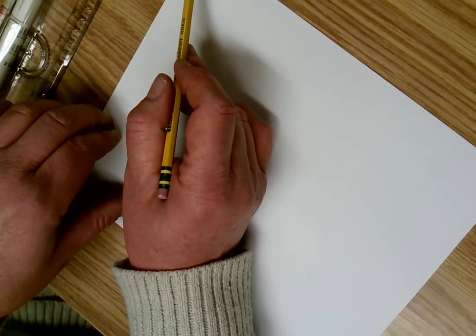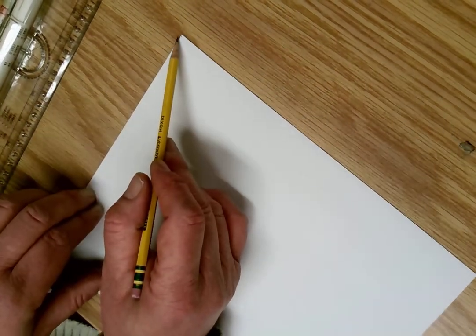Now, I always start with the diagonals, and what you want to do is take your straight edge and go from this corner to the opposing corner and draw a line.